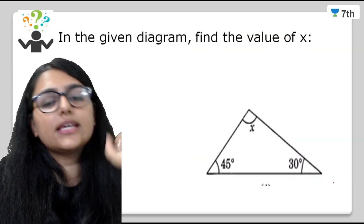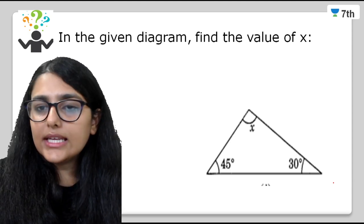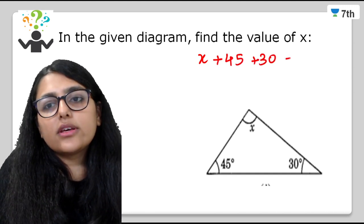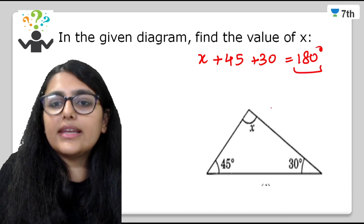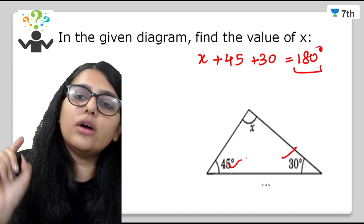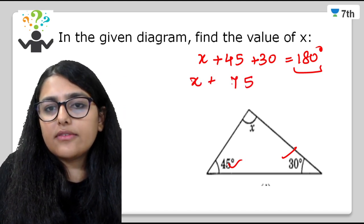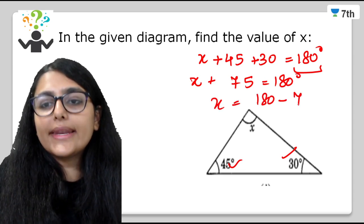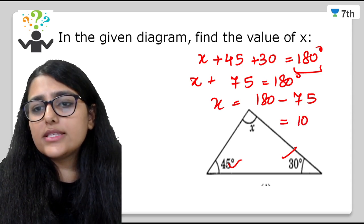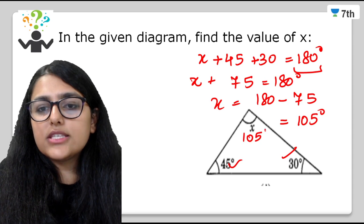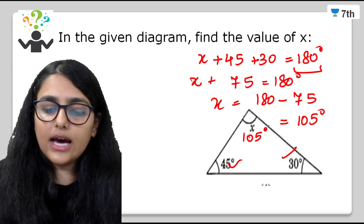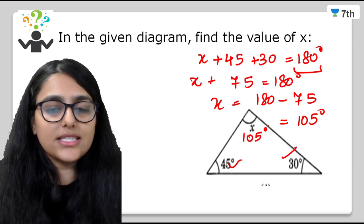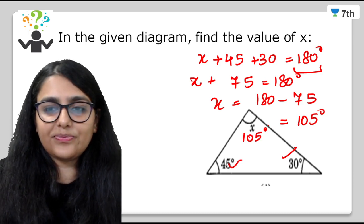In the given diagram, find the value of X. We only have interior angles, and X + 45 + 30 = 180. So X = 180 − 75 = 105 degrees. You can check: 105 + 45 + 30 = 180 degrees. Correct!